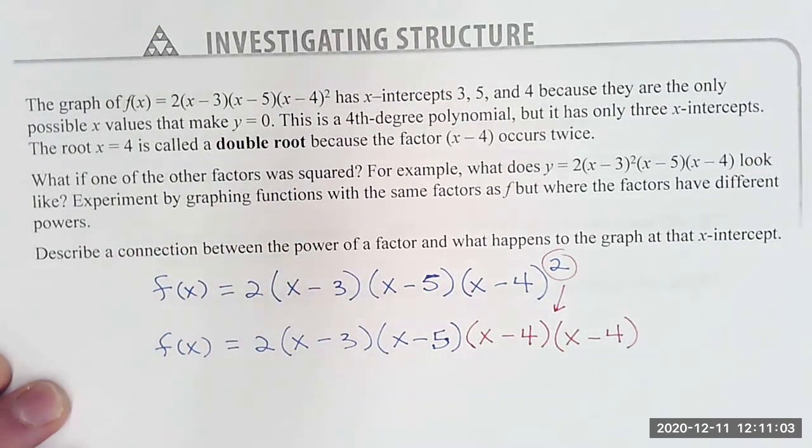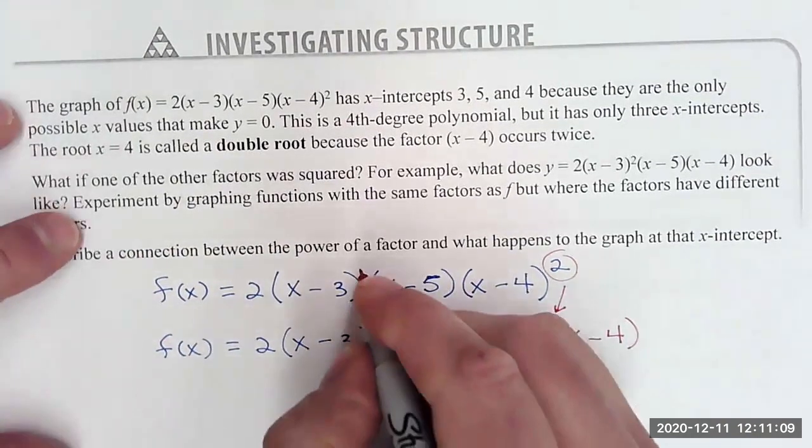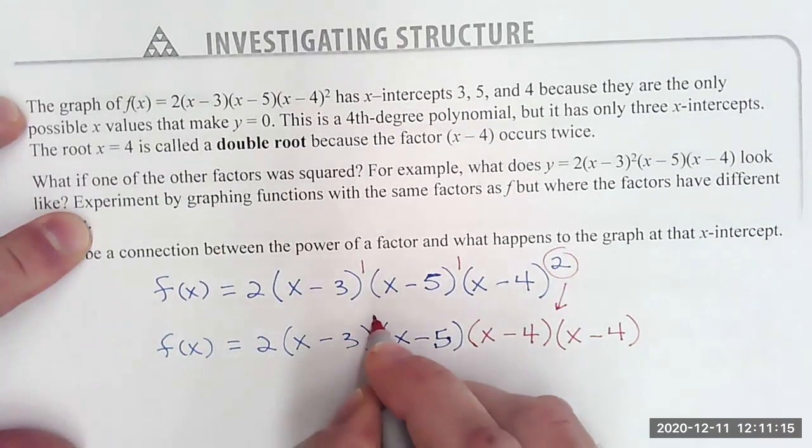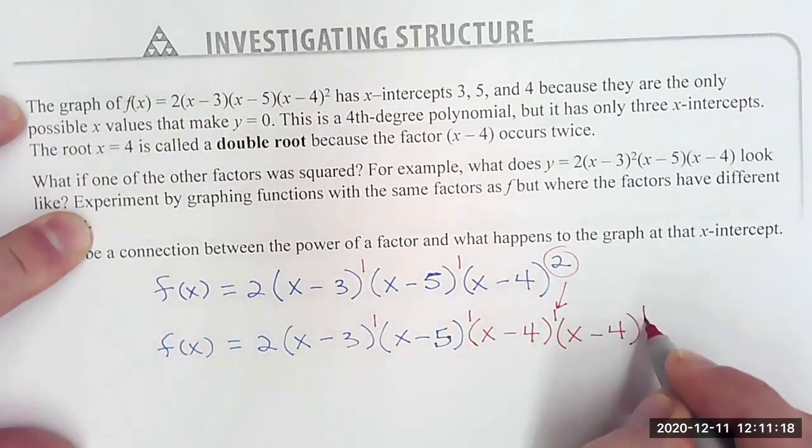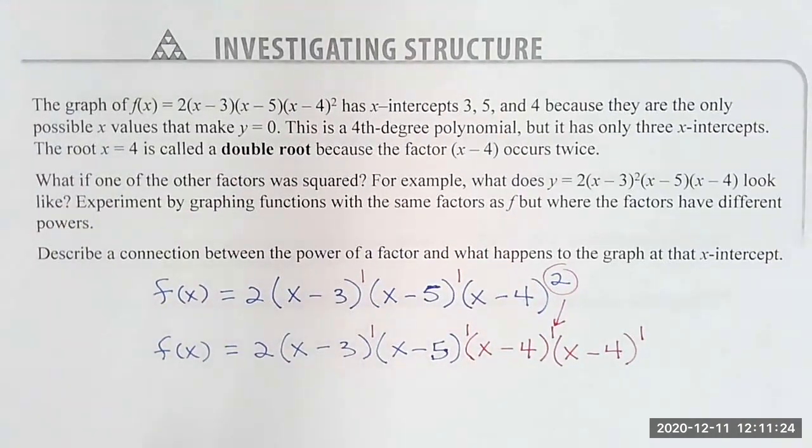So I've also included in Desmos a little reminder that if we don't have a power, then it's really just the power of one. So the power of the factors is the multiplicity for those roots, and the multiplicity and the number of roots gives you some information as to the degree of the polynomial. So I know this is 1, 2, 3, 4, degree 4. This is degree 4, which is 1 plus 1 plus 2.